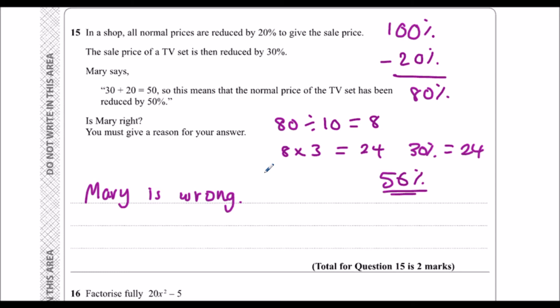How can I put that in words? Mary is wrong, and the reason is the second reduction is from the sale price.